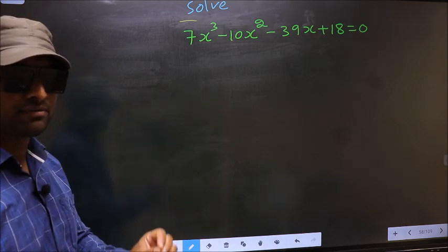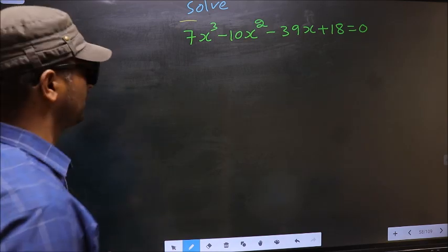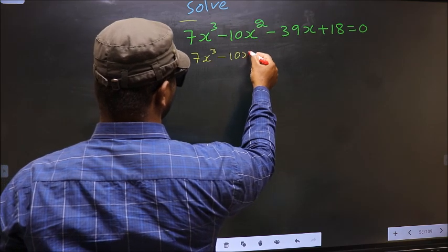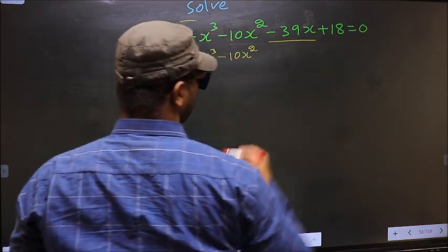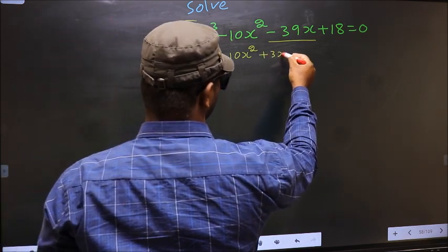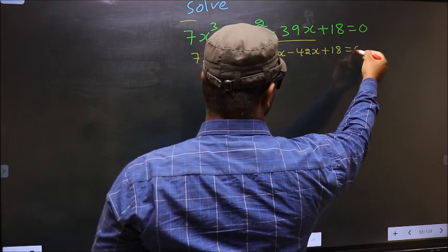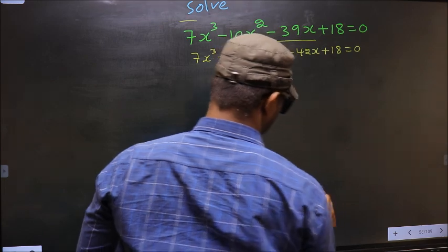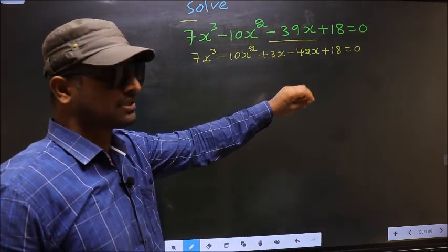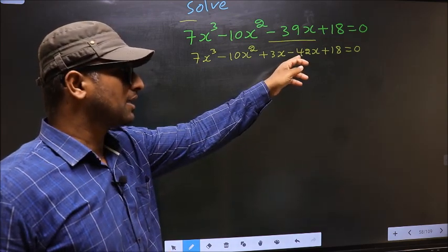For that, we have to change the x term. In place of -39x, we write +3x - 42x. So: 7x³ - 10x² + 3x - 42x + 18 = 0.